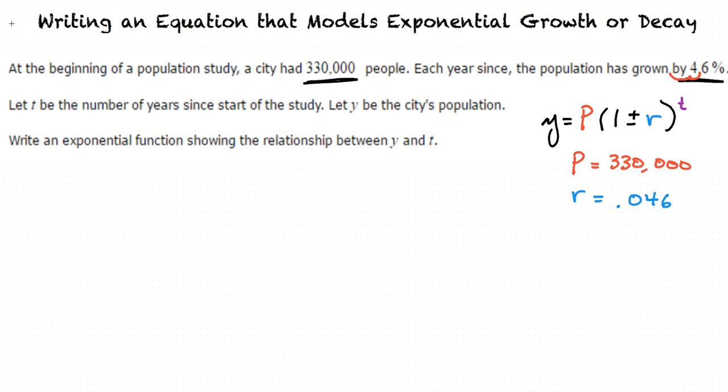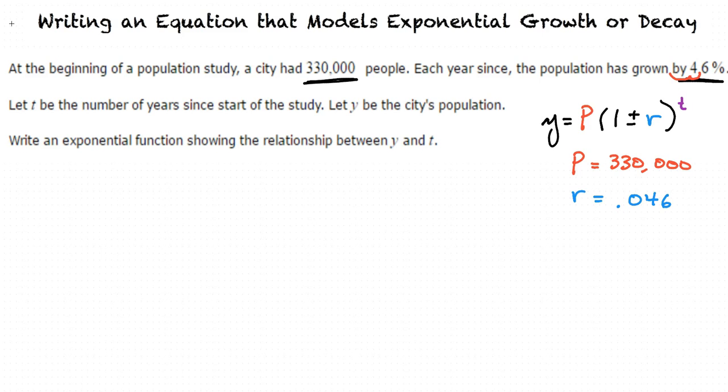Now that we have our R and our P, we can write the equation. So we have, at first, Y equals 330,000 times the quantity of 1 plus .046 to the T.